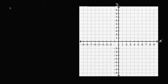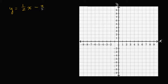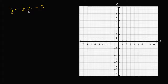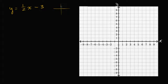Let's say that we have the linear equation y is equal to one half x minus three. If we wanted to draw the line that represents the set of all points — all the coordinates where the x value and the y value satisfy this equation — we could start off by trying to draw a few of those points and then connecting them with the line.